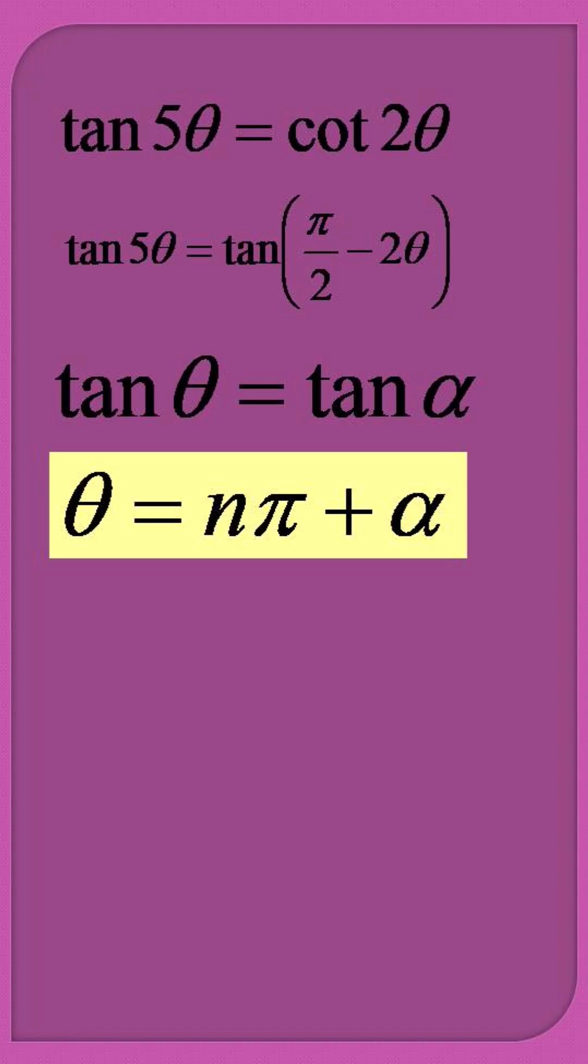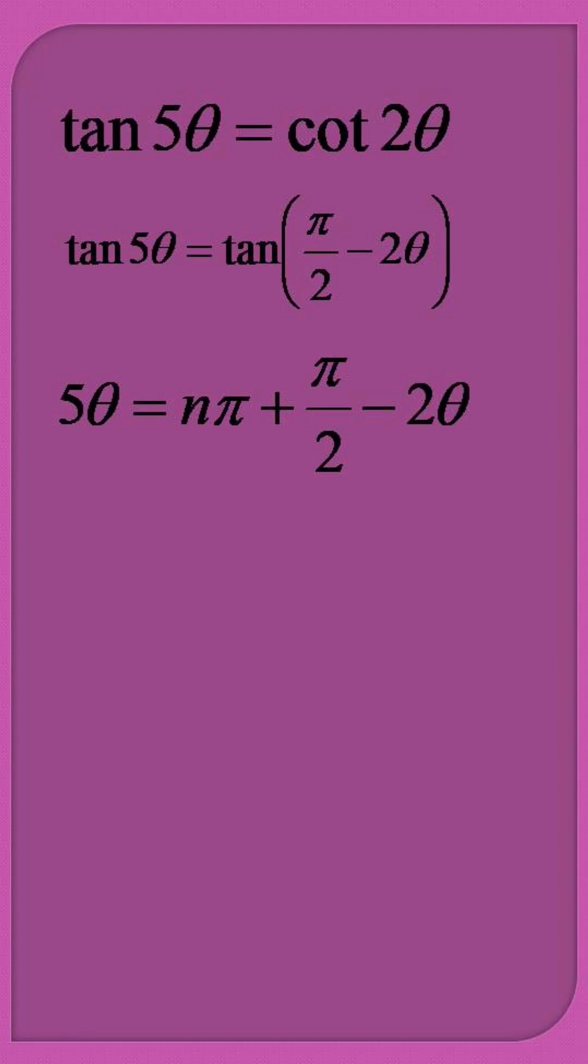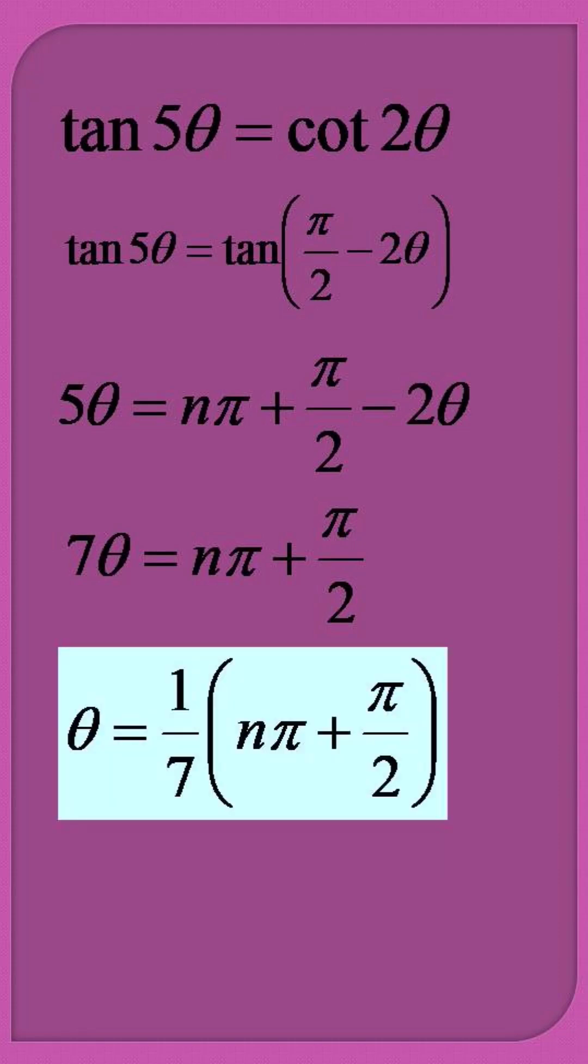So the solution to this equation is 5 theta equals n pi plus pi by 2 minus 2 theta, which can be represented as 7 theta equals n pi plus pi by 2. The solution becomes theta equals 1 by 7 of n pi plus pi by 2. Thanks for watching.